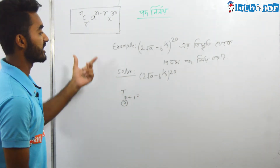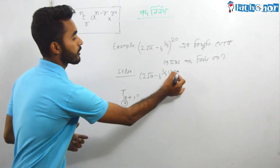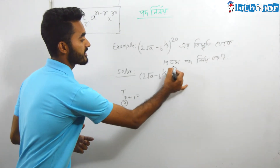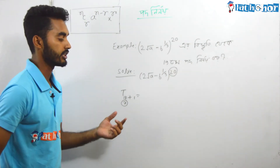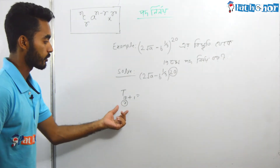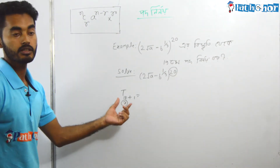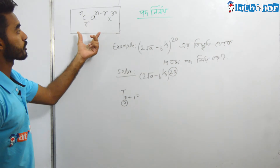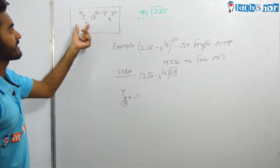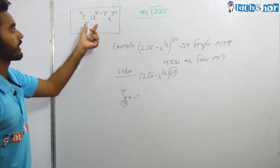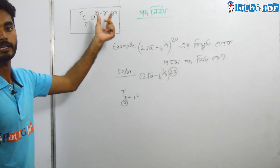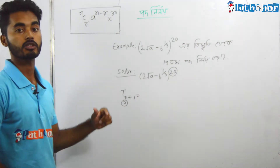We already know n is 20. So we write 20 C r, which is 20 C 18, times a to the power n minus r.